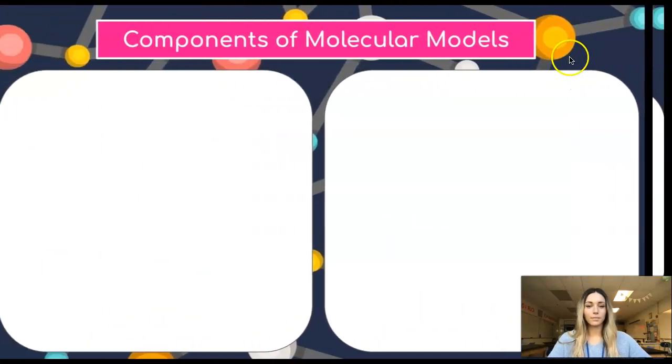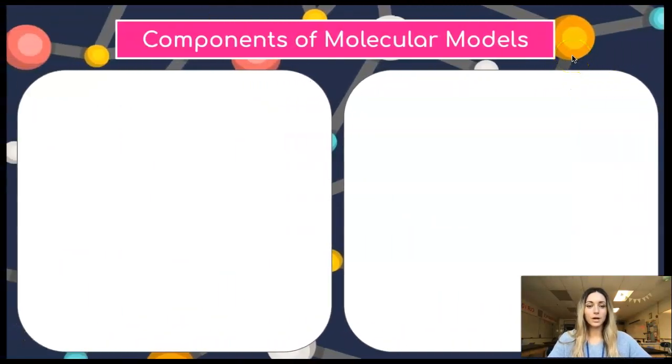Now that we know what molecular models are, let's talk about the components or parts of a molecular model. In any molecular model, first you have circles that are used to represent each atom.